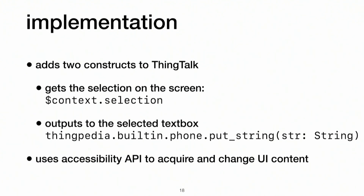This is actually easy to implement on the assistant side. The harder part is the accessibility API — figuring out how to get information from the screen or manipulate its content. On the assistant side, I add two constructs into ThingTalk: one that gets a selection on the screen, retrieving the information I selected, and another that allows outputting information back. After a command executes and returns a result, the second construct puts that result back onto the screen. We use the Android accessibility API to acquire and change user content.